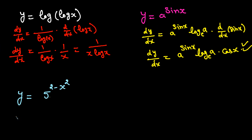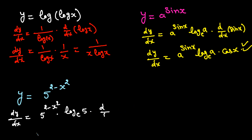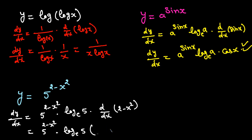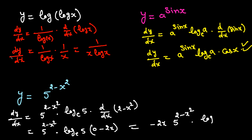Similarly, for y equals 5 raised to the power (2 minus x squared): dy/dx is 5 to the power (2 minus x squared), times log base e of 5, times the derivative of (2 minus x squared). The derivative of 2 is 0 and the derivative of negative x squared is negative 2x. Simplifying gives dy/dx equals negative 2x times 5 to the power (2 minus x squared) times ln 5.